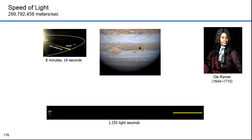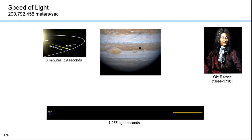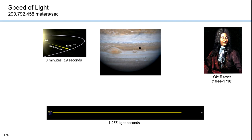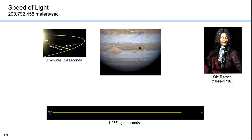In his 1704 book Optics, Isaac Newton reported Romer's calculations of the finite speed of light and gave a value of 7 or 8 minutes for the time taken for light to travel from the Sun to the Earth. The modern value is 8 minutes 19 seconds. Newton queried whether Romer's eclipse shadows were colored. Hearing they weren't, he concluded that different colors travel at the same speed.